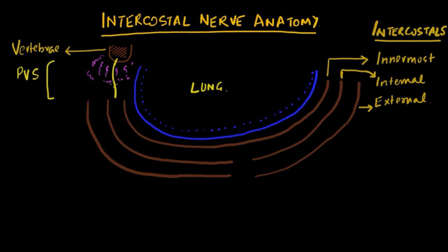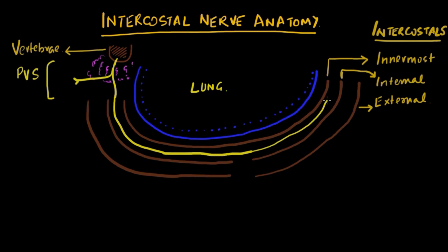As it comes through the paravertebral space, it divides into a dorsal branch and a ventral branch. The ventral ramus then continues in the intercostal space as the main intercostal nerve.